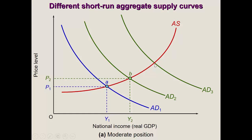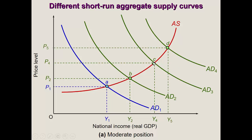Now let's start from a slightly higher position, at point C, where aggregate demand has moved to AD3, with a rise in price to P4 and equilibrium output at Y4. If we move further from C to point D with AD4, we can see that the price change is now larger than the output change. The distance between Y5 and Y4 is smaller than Y2 minus Y1. So at lower price levels, a small price increase yields a large output gain, while at higher output levels, prices rise much faster relative to output.